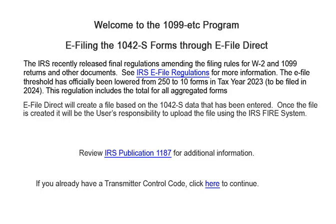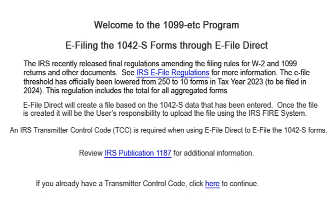The IRS recently released final regulations amending the filing rules for W-2 and 1099 returns and other documents. See IRS e-file regulations for more information. The e-file threshold has officially been lowered from 250 to 10 forms in tax year 2023, to be filed in 2024. This regulation includes the total for all aggregated forms.